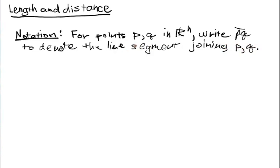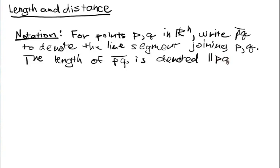So this is a nice simple geometric object that we know from geometry. And we're going to say the length of PQ is denoted. So we have a double vertical line here, PQ line.